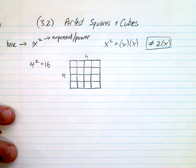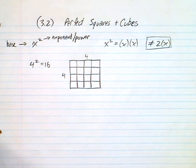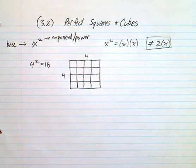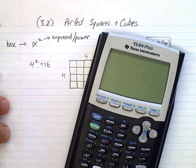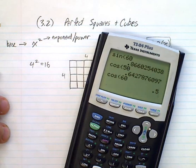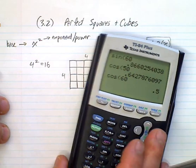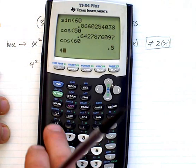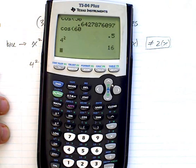We're going to be estimating square roots — big numbers. Sometimes we're going to have cubes or squares that have a side length of 100 or 50, so we end up with very large numbers. What you're going to be using is your calculator as well. Here's the x squared button, so 4 squared would equal 16.